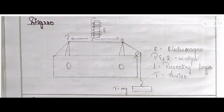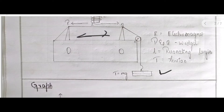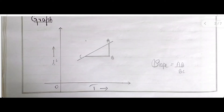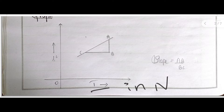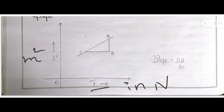Here is the diagram: this is the sonometer with a magnet, and a certain mass is hung to the string. This is a sonometer of length one meter. Here is the graph — we have to plot tension versus length squared. Tension is on the x-axis in newtons, and L² (length squared) is on the y-axis in meters squared. The slope is AB/BC, which we calculate using our readings.